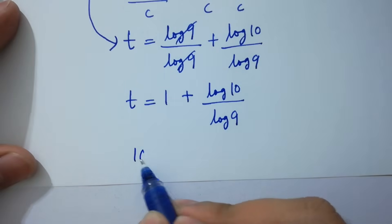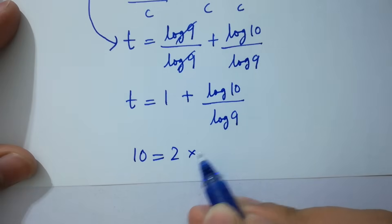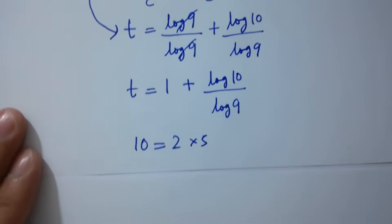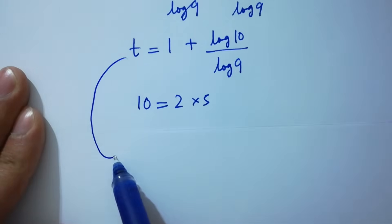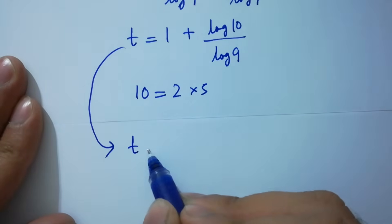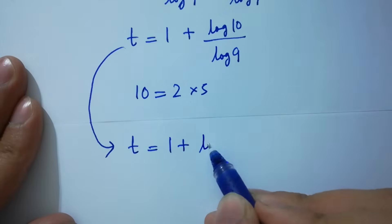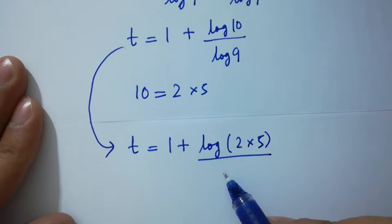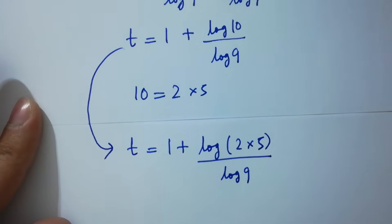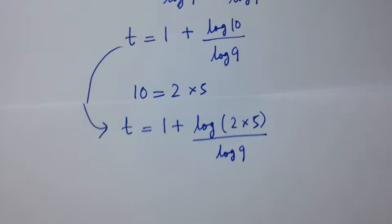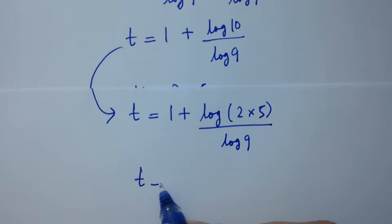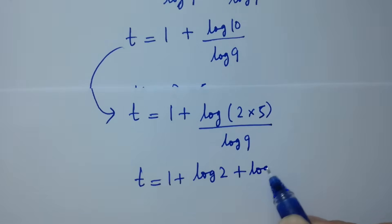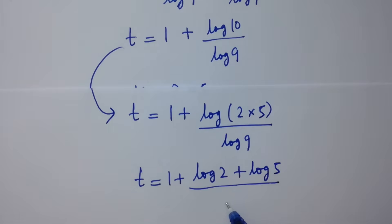Since 10 equals 2 times 5, t equals 1 plus log of 2 times 5 over log 9. Expanding, t equals 1 plus log 2 plus log 5 over log 9.